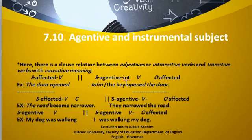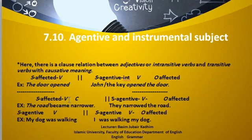The key is instrumental. 'Opened' is the transitive verb, and the door is the object which is affected. Then there is the subject affected with the verb and complement — the copular verb and the complement. For example, 'the road became narrower': the road is the affected subject, 'became' is the copular or linking verb, and 'narrower' is the complement.